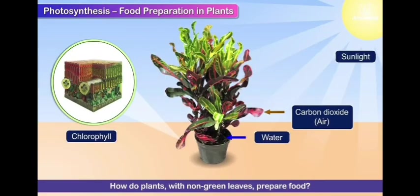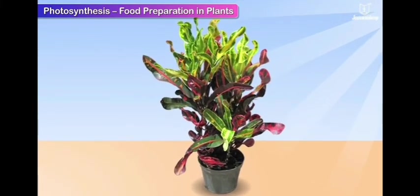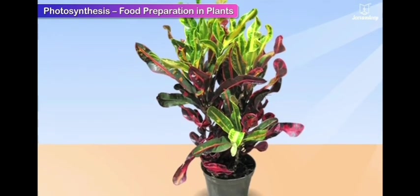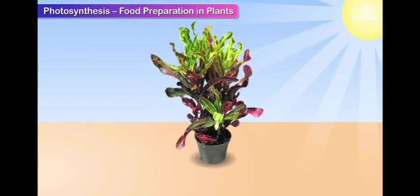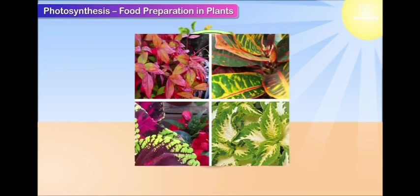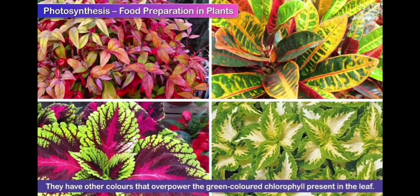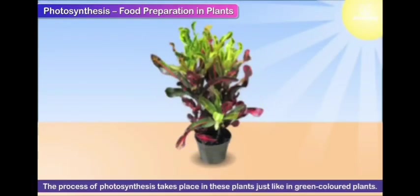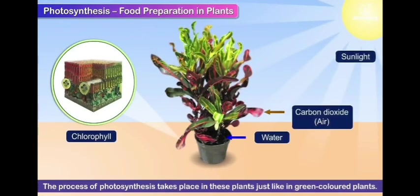Let us know that the plants which have different colors, how do they make food? They make food similarly like the green color plants. But the only difference is, the green pigment of the chlorophyll is overpowered by the other color pigments. That's why green color is not visible to us and they appear different colors. The process of photosynthesis takes place in these plants just like the green color plants.